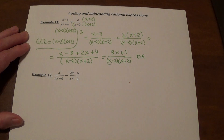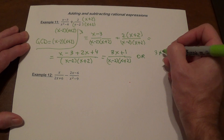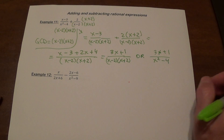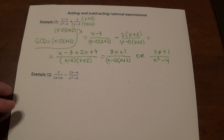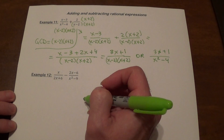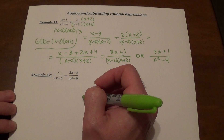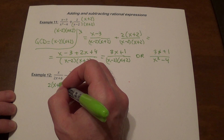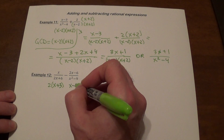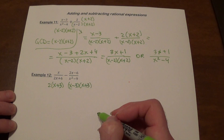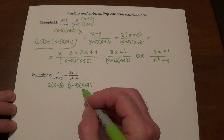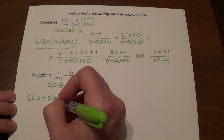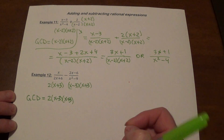You can also write this answer as 3x plus 1 divided by x squared minus 4 — it's the same answer, just a slightly different form. In example 12, the first thing you always want to do is attempt to factor the denominators and see if you can find common factors. We factor out 2 in the first denominator to get 2 times x plus 3. The second denominator factors as x minus 3 times x plus 3 — that's the difference of squares. They have x plus 3 in common; the remaining unique factors are 2 and x minus 3. So the greatest common denominator is 2 times x minus 3 times x plus 3.